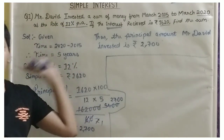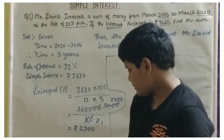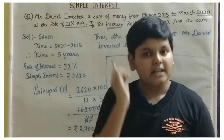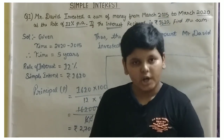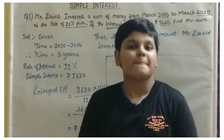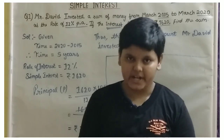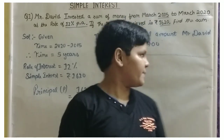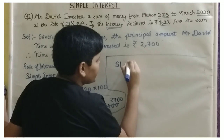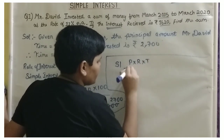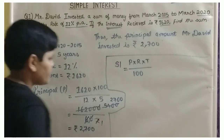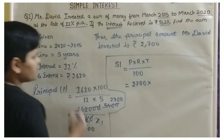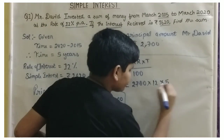But what if you have to check whether this answer is correct? I got the answer that the principal value is 2,700 — how can we be sure? We will take our SI formula: Simple Interest is equal to Principal into Rate into Time by 100, and we are going to verify our simple interest. Our principal value is 2,700, rate of interest is 12%, and time period is 5 years, divided by 100.